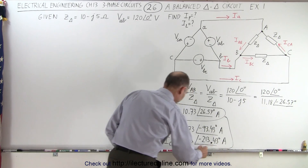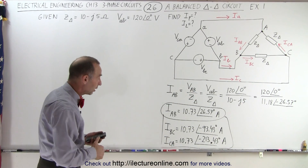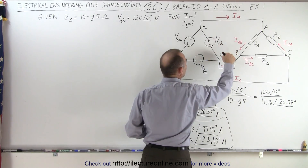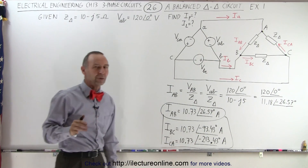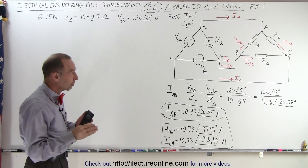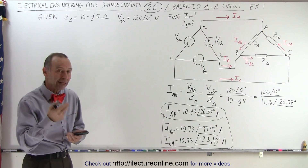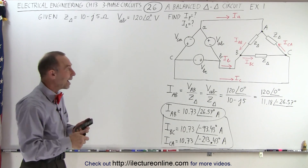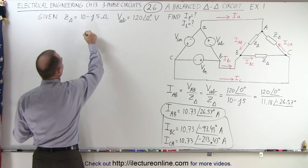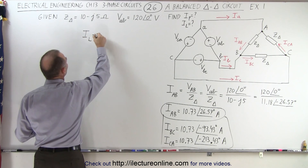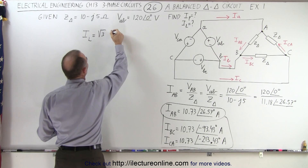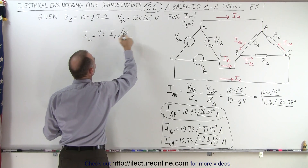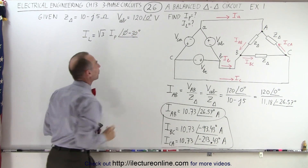Those are the three phase currents through the three load branches. Now we want to find the line currents Ia, Ib, and Ic. Just like with a Y-delta circuit, the line currents lag the phase currents by 30 degrees, and the magnitude is the square root of three times the phase current. In other words, the line current equals the square root of three times the phase current magnitude, with the phase angle of the phase current minus 30 degrees.